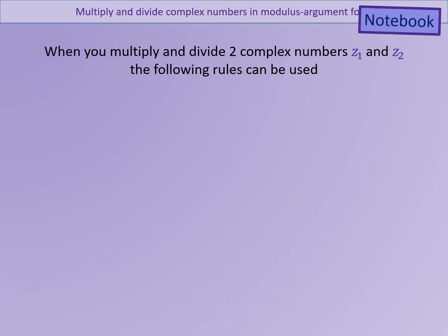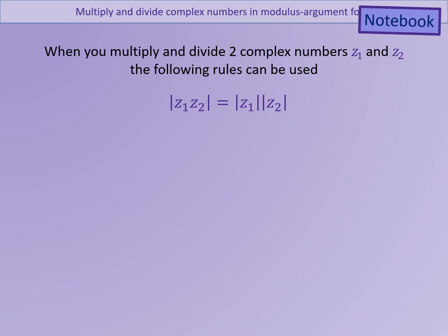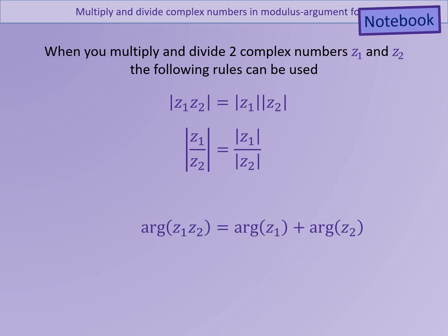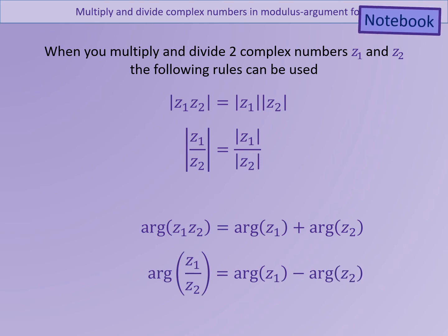So the rule in general is: if you've got two complex numbers Z1 and Z2, the modulus of the product Z1·Z2 is the same as the modulus of Z1 times the modulus of Z2. The modulus of the quotient Z1 over Z2 is the same as the modulus of Z1 divided by the modulus of Z2. And with the arguments, instead of multiplying and dividing, it's adding and subtracting: the argument of Z1·Z2 equals the argument of Z1 plus the argument of Z2, and the argument of Z1 over Z2 equals the argument of Z1 minus the argument of Z2.